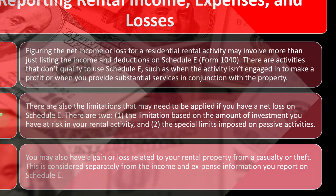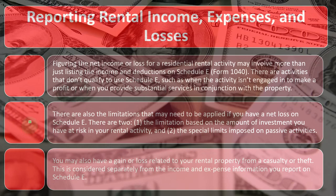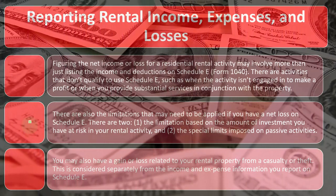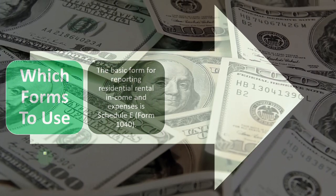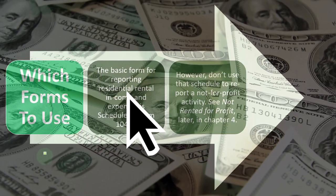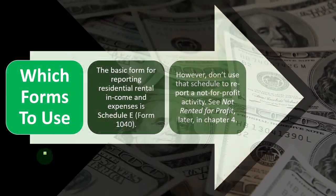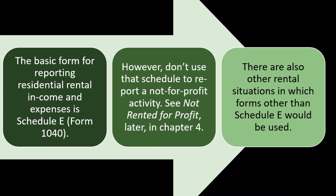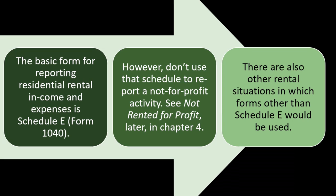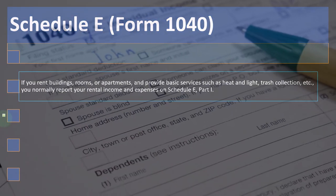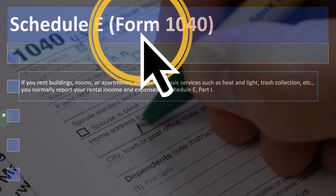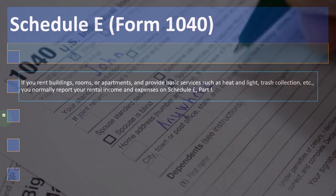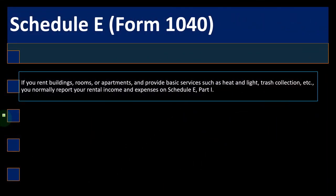You may also have a gain or loss related to your rental property from a casualty or theft, which is considered separately from the income and expense information you report on Schedule E. The basic form for reporting residential rental income and expenses is Schedule E, Form 1040, rather than Schedule C. It's an income statement type of form for rental property. However, don't use that schedule to report a not-for-profit activity. Schedule E is used if you rent buildings, rooms, or apartments and provide basic services such as heat and light, trash collection, etc.